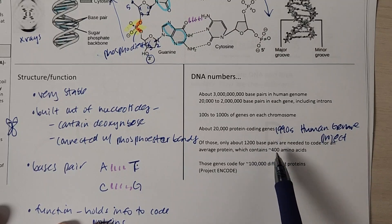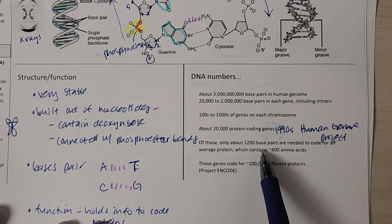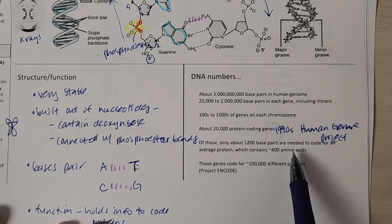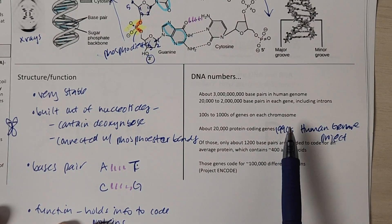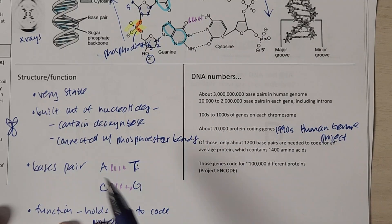Within these genes, it actually, you're going to have an average protein that you're able to code for being about 400 amino acids. So there's a lot of information in the genes that is not directly used in making the protein.